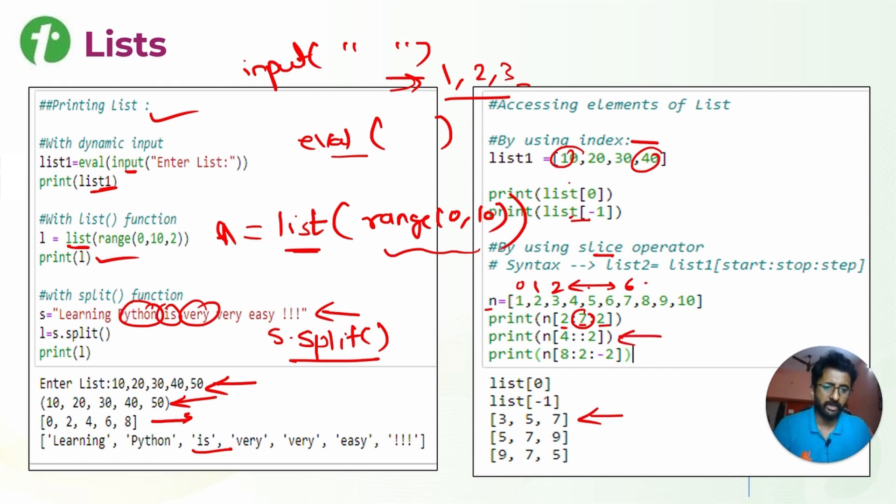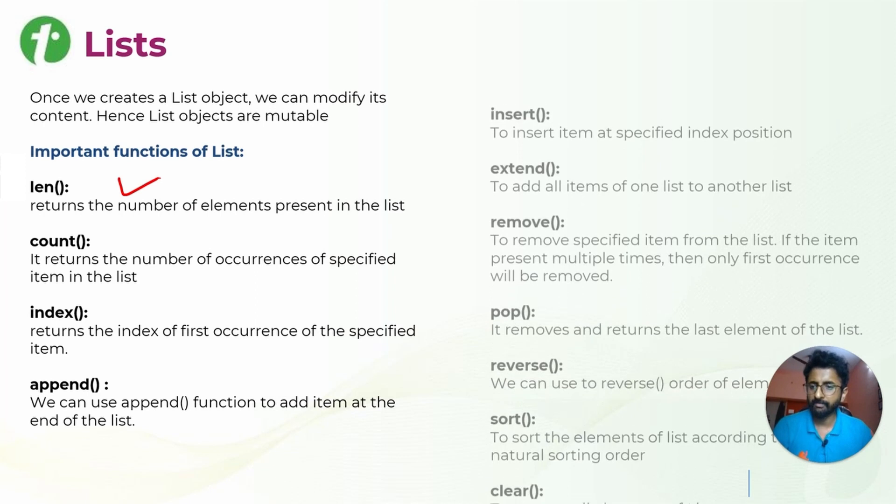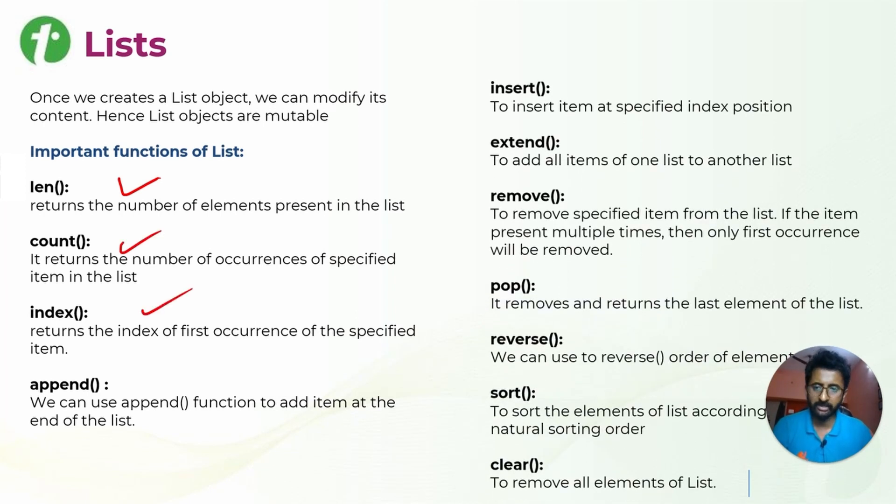Similarly, we are just taking different ranges to get our outputs. We can access the elements with indexes or with range as well. After that, there are a few functions that we have seen.